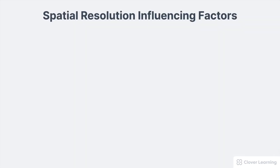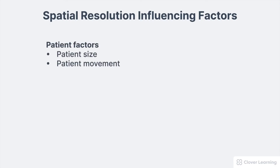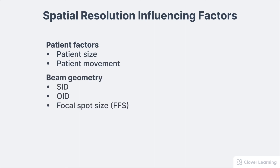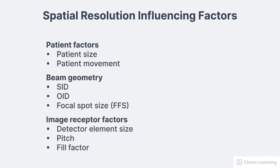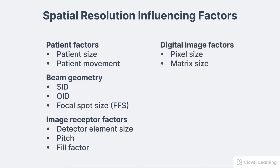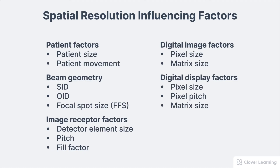So what affects radiographic spatial resolution? There are five general categories. First, patient factors such as patient size and patient movement. Second, beam geometry — that's the SID, OID, and the focal spot size. Third, image receptor factors: the detector element size, the pitch, and the fill factor. Fourth, digital image factors, which include pixel size and matrix size. And finally, digital display factors — that's the monitor used to display the image, including its pixel size, pixel pitch, and matrix size.